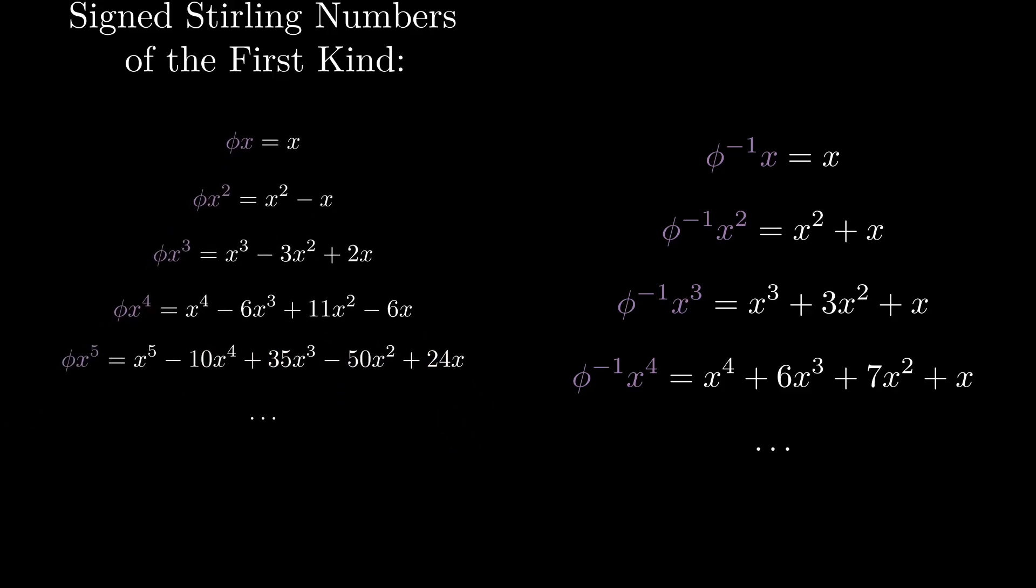These coefficients on the right, known as unsigned Stirling numbers of the second kind, have a similar recurrence relation, though this time we're multiplying that first number by the exponent on the term it came from. Add them up, and you get the term below.